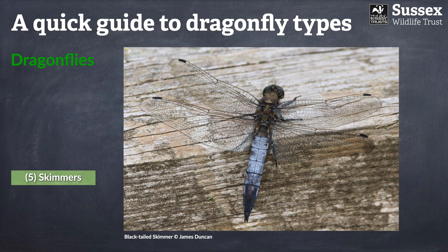The next group are the skimmer dragonflies. You may ask what are the differences between the skimmers and the chasers, because they do look quite similar — and you're right, they also have very distinctive pointed abdomens. We have just two species of skimmer in Britain, but different from the chasers, the skimmers tend to perch largely on the ground or very close to the ground, and you'll often see them skimming low over the water.